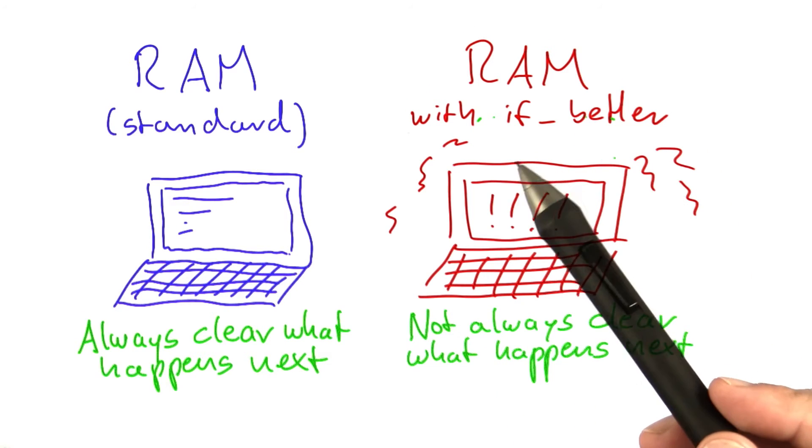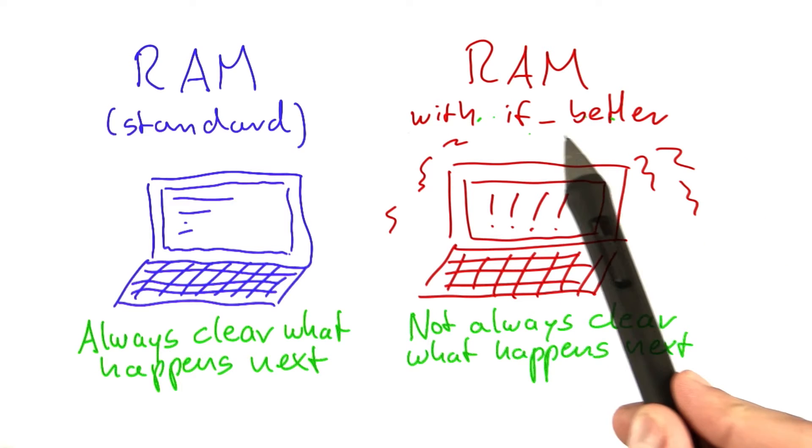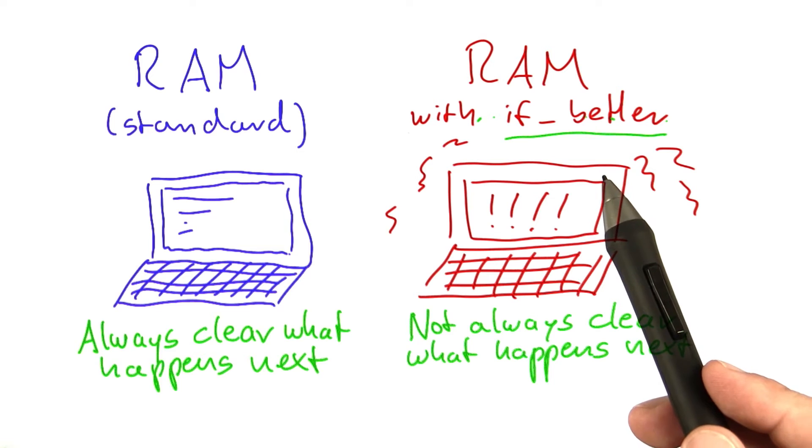For this RAM over here, you could also go through it step by step by step. But once you encounter this if better function here, you could not really say what it's going to do next. You would have to try different cases.